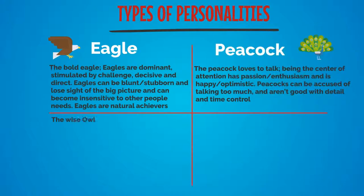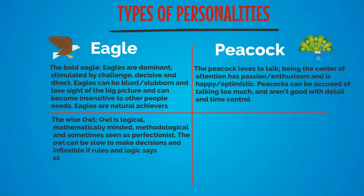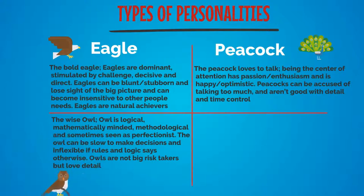The wise Owl is logical, mathematically minded, methodical, and sometimes seen as a perfectionist. The Owl can be slow to make decisions and inflexible if rules and logic say otherwise. Owls are not big risk-takers but love detail.